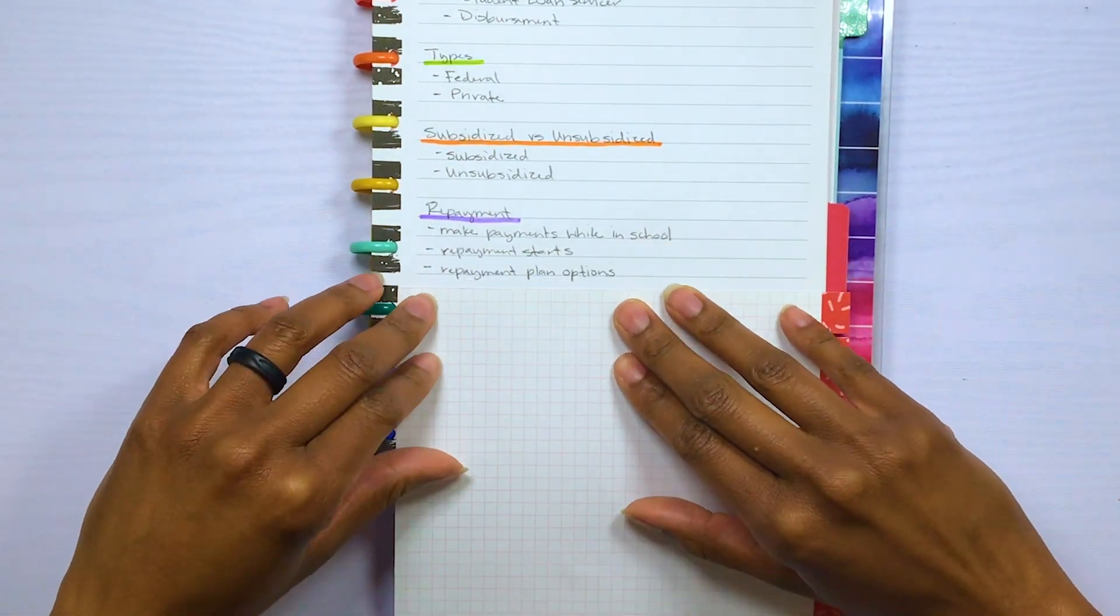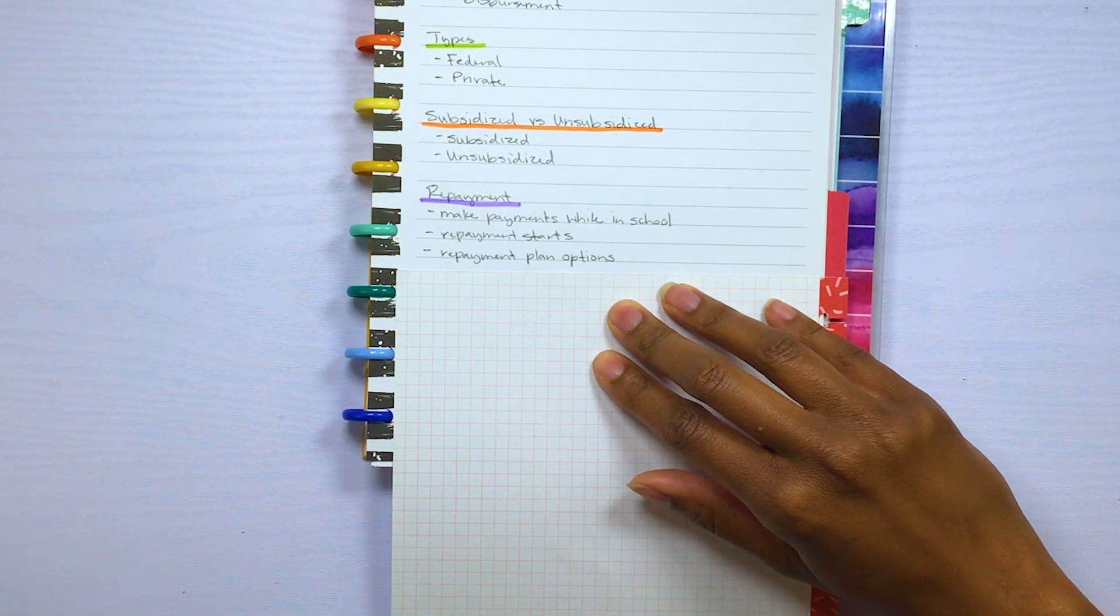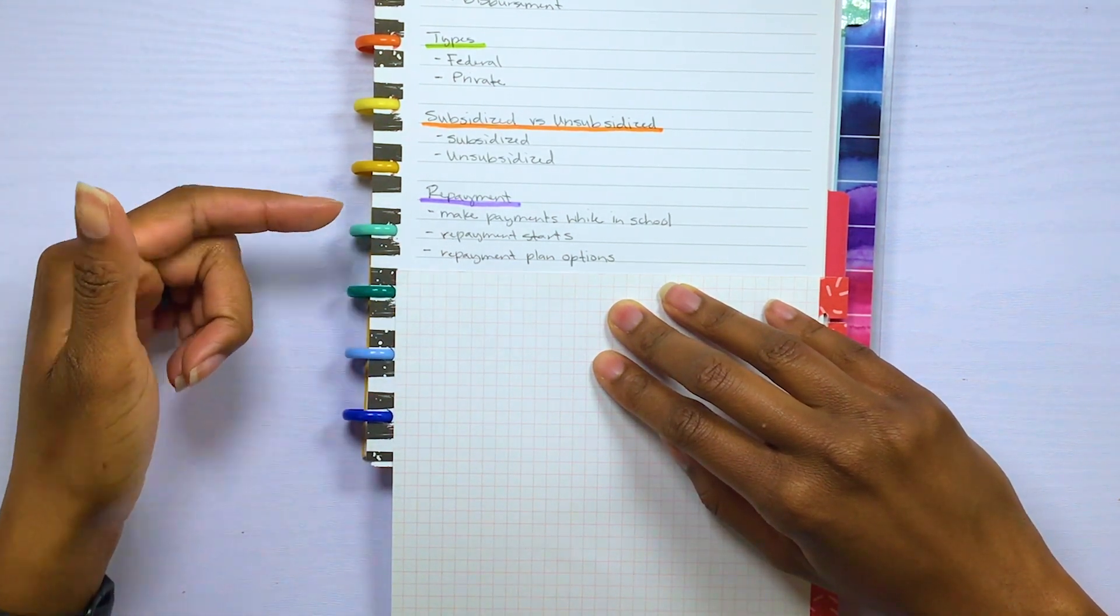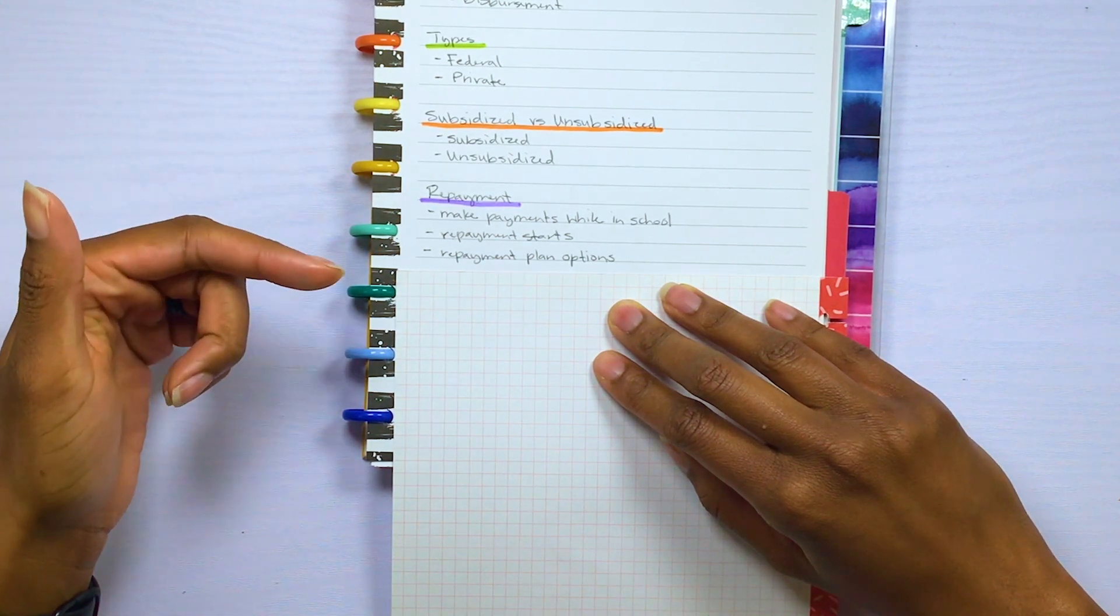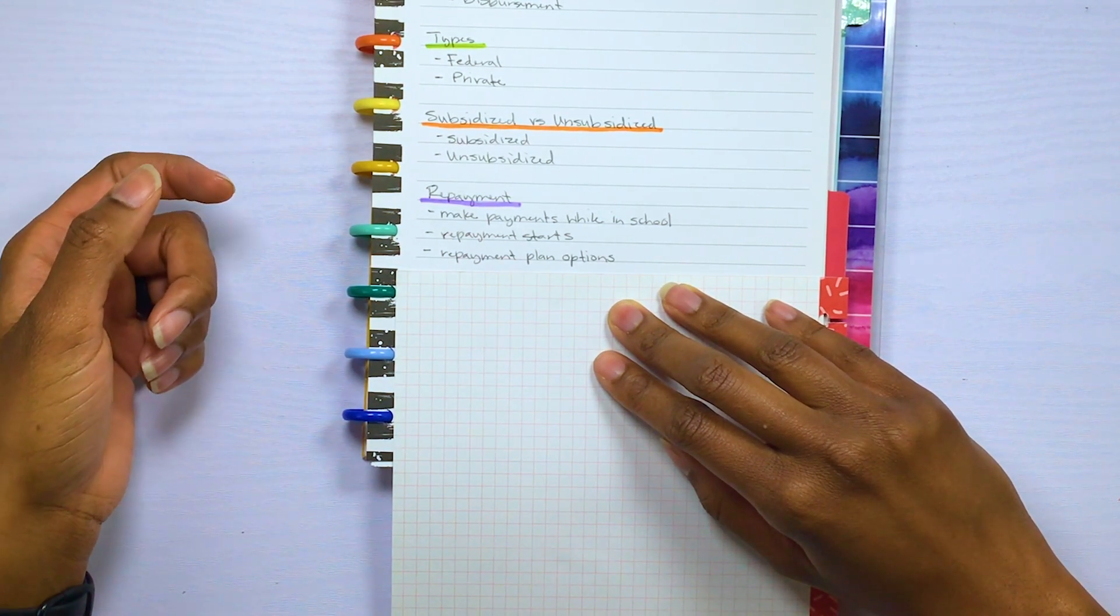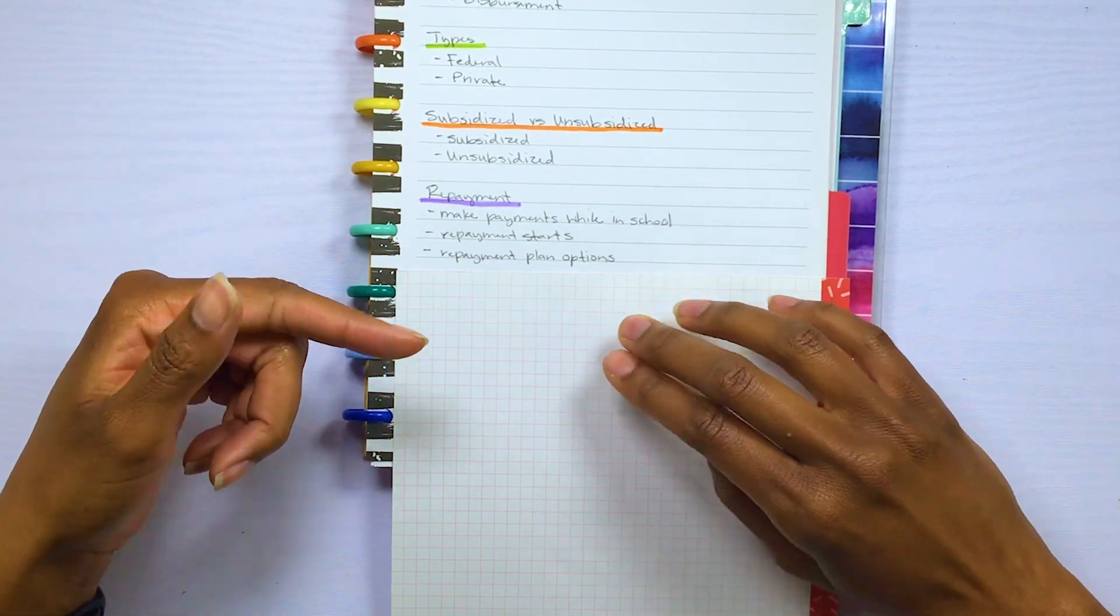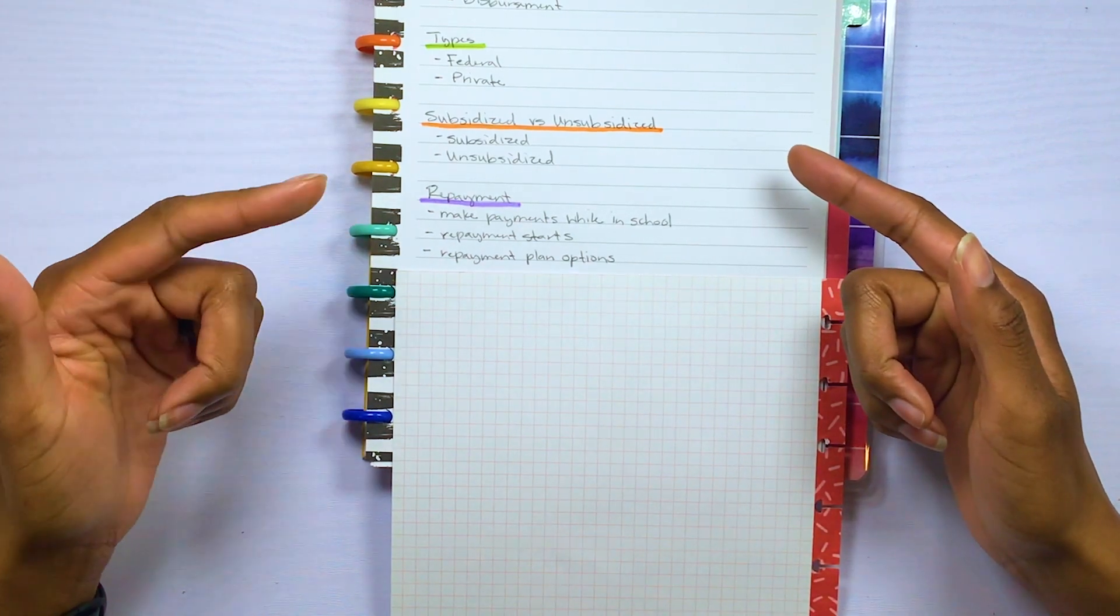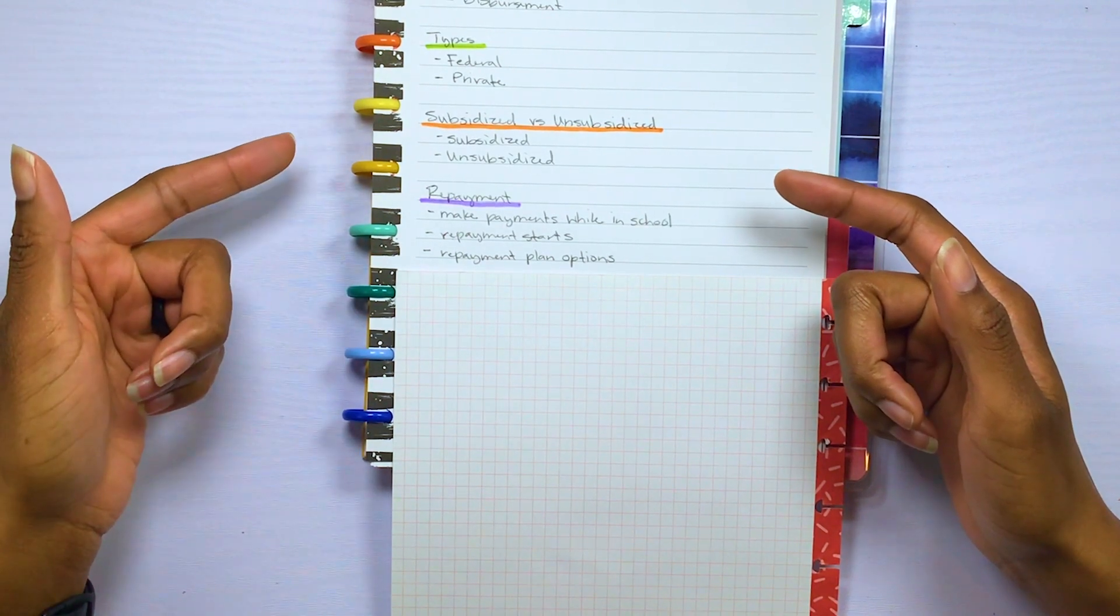Okay, so the next section will be repayment. So know that you can make repayments or you can make payments on your loans while you are still in school. So if you graduate with loans, most federal loans give you a six month grace period before your loan goes into repayment status. But know that there are ways to trigger the start of your repayments. And two of those ways is if you leave school or if you drop below half time enrollment.